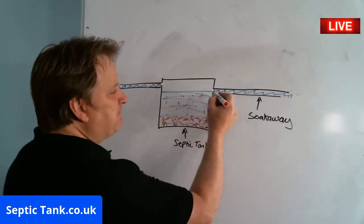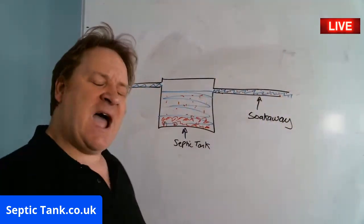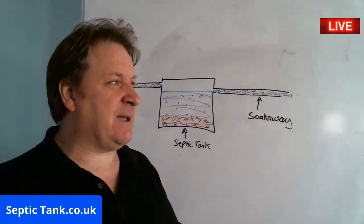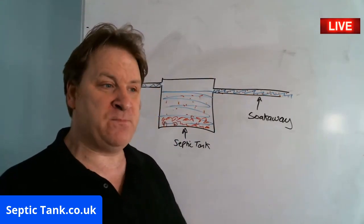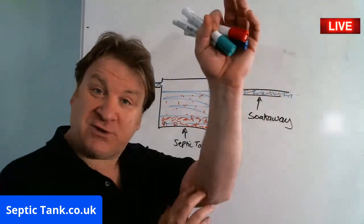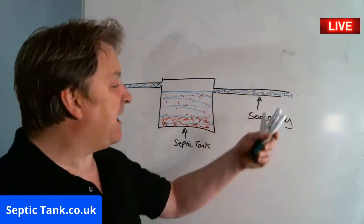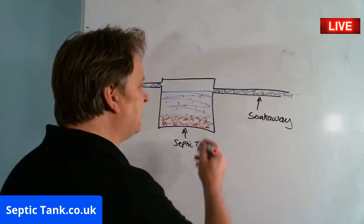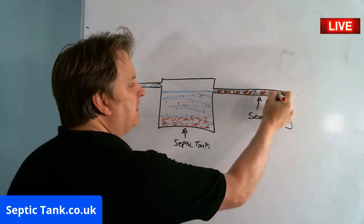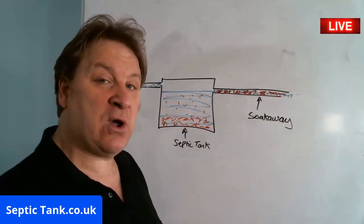These suspended solids make their way into the soak away. And over time, it's like if you have a bad diet and you're eating fried food all the time — the cholesterol and fat blocks your arteries up. It's the same with a soak away. A soak away is like an artery and it blocks up with cholesterol, fat, grease and sludge, until it just blocks the pipe up and the water in your septic tank cannot soak away anymore.